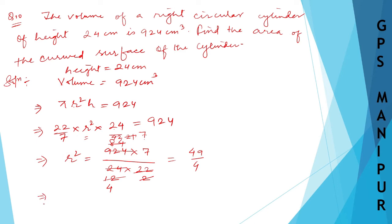So we get 49/4. To find the radius r: r equals √(49/4), which equals √49/√4 = 7/2. So the radius is 7/2.